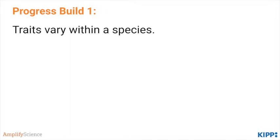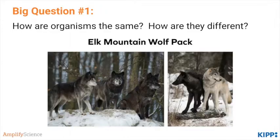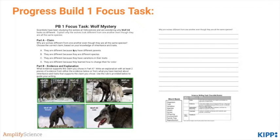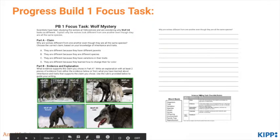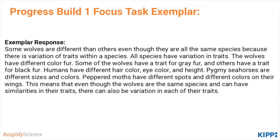By the end of the chapter, students have come to fully understand Progress Build 1: the idea that traits vary within a species. Students return to the mystery of the Elk Mountain wolf pack and why Wolf 44 doesn't seem to have the same traits for fur color as the other wolves. In the Progress Build 1 focus task, students choose a claim as to why this might be, and then write an explanation using different pieces of evidence. There's a word bank and a checklist for students to check their work. Go ahead and complete this task now and then check back here to see an exemplar response. Pause now.